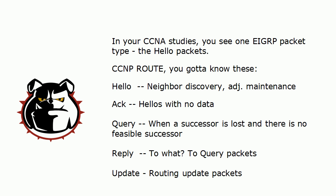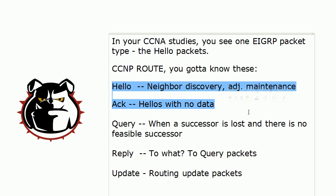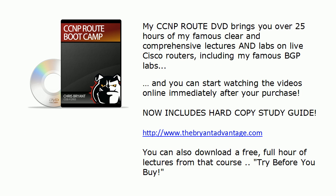One more important detail: two of these packet types are considered unreliable. They are the hellos and ACKs, simply because they do not use RTP — the Reliable Transport Protocol. Without hellos and ACKs, we literally cannot form or maintain an EIGRP adjacency, yet they are considered unreliable. The others — queries, replies, and updates — are of course considered reliable.